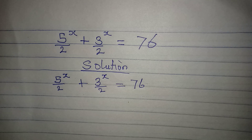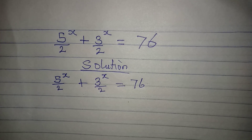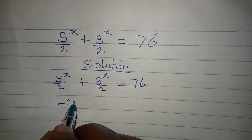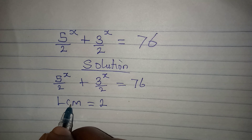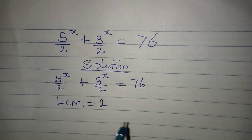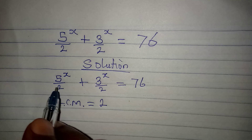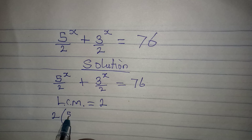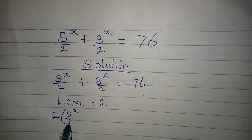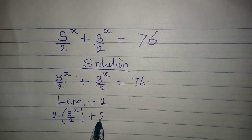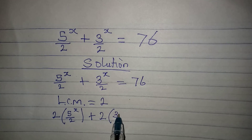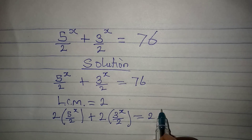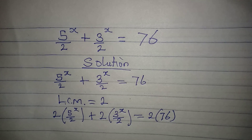How do I deal with this? The first thing I want to do is to get the LCM, and the LCM will be equal to 2. So if the LCM is 2, then multiply all through by the LCM — 2 multiplied by 5 to the power of x over 2, plus 2 multiplied by 3 to the power of x over 2, equal to 2 multiplied by 76.